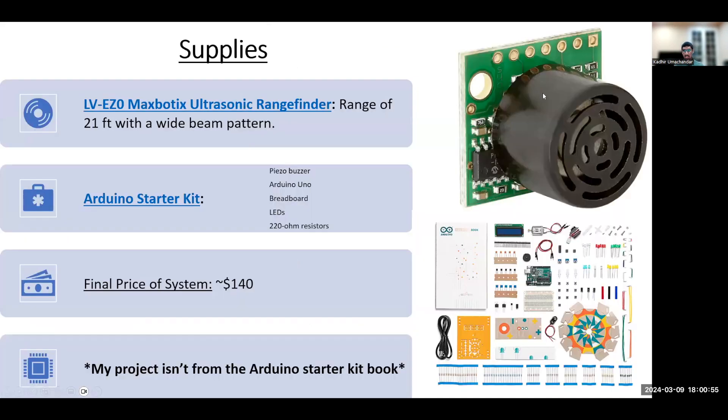First for supplies you'll need a distance sensor and I chose this particular ultrasonic sensor since it has a range of 21 feet with a wide beam pattern. Then you'll need this Arduino starter kit which includes the following items. The final price of the system comes to about $140 which is cheap considering that similar systems in newer vehicles cost thousands of dollars.